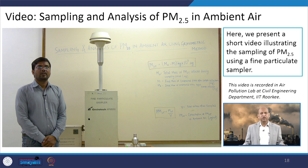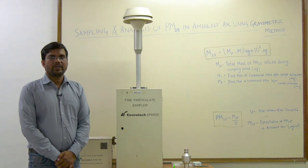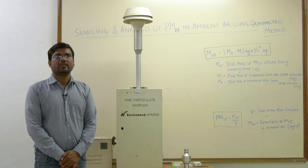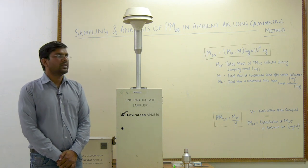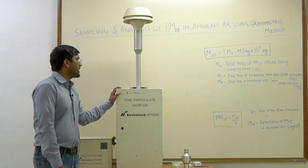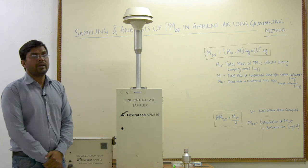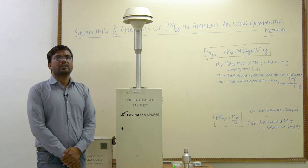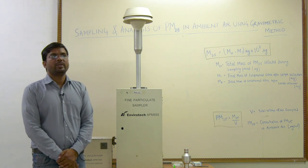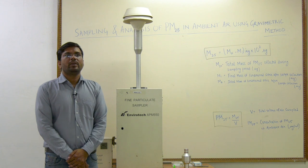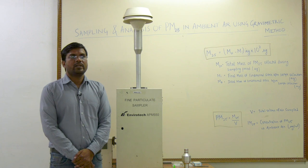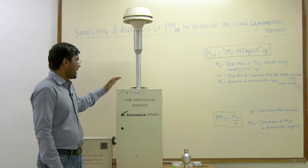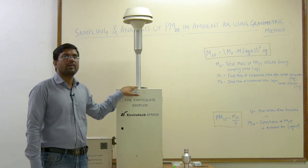Good morning friends. Welcome to this experiment of the subject air pollution and control. This is our second experiment where I will demonstrate the purpose: measurement, sampling, and analysis of PM 2.5 in ambient air using gravimetric analysis. Like in the previous experiment we learned about PM 10 measurement, similarly we have a device to measure PM 2.5 concentration in ambient air — the instrument used is called the Fine Particulate Matter Sampler by Enviratec, known as APM 550.